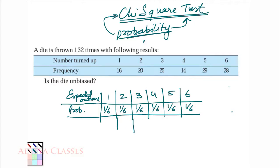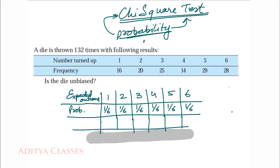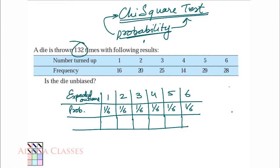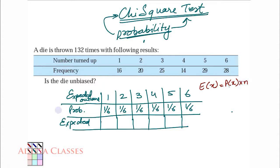If the probability is 1/6, that means if I roll a die once, I have a 1/6 chance of getting 1, 2, 3, or anything. But the die has been rolled 132 times. Expected return is probability of a return multiplied by number of trials: E(X) = P(X) × N. This is our P(X), and N = 132 as given. So what will be my expected frequencies?